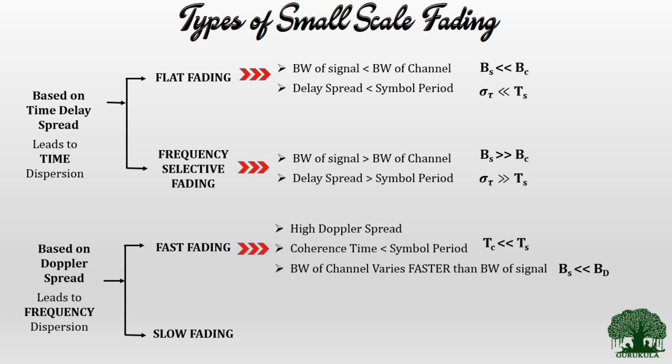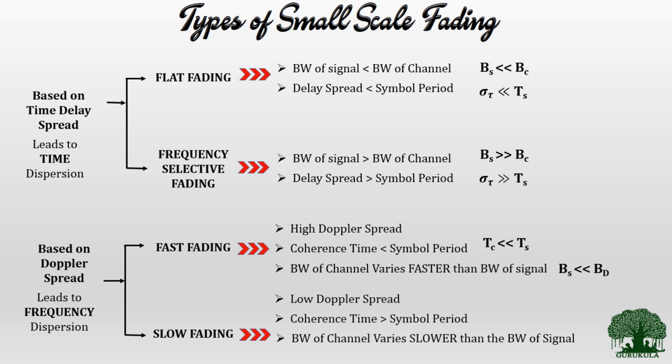Slow fading is experienced whenever we have very low Doppler spread, when the coherence time T_c is greater than the symbol period T_s, and when the variation of channel bandwidth is slower than the signal bandwidth variation. I recommend noting all these symbols carefully, as the next slide will use symbols only.